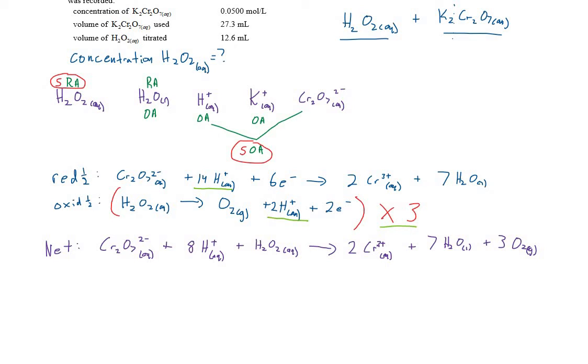We were told that the concentration of potassium chromate was 0.05 moles per liter. So the concentration of just the dichromate anion will be the same thing. And we were also told that we have 27.3 mL of that stuff. We also know we have 12.6 mL of hydrogen peroxide, and we are wondering the concentration of that. So just like we used to do, we'll take our 27.3 mL of the dichromate anion, times by 0.0500 moles per liter, in such a way that we'll be able to cancel out liters or milliliters.